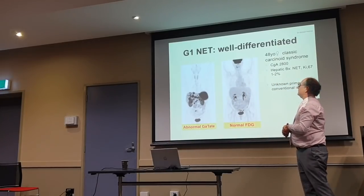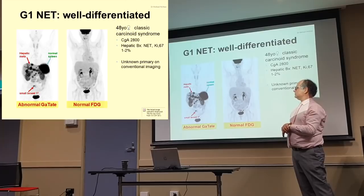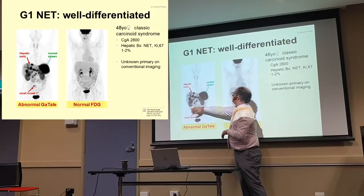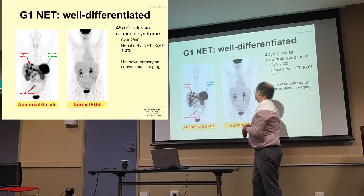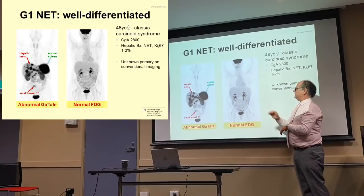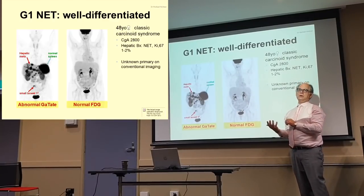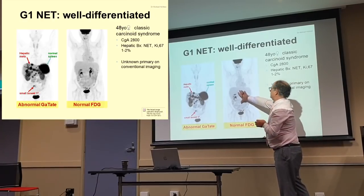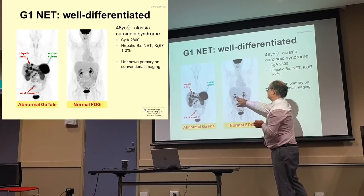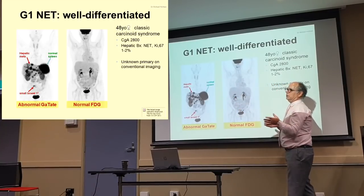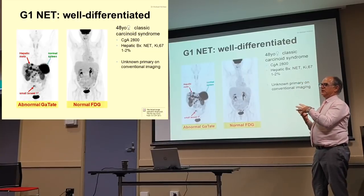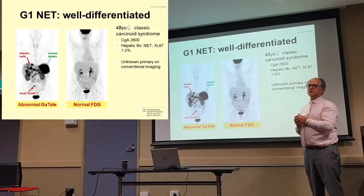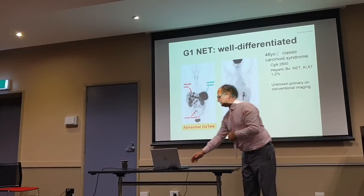This is an example of a patient with a well-differentiated neuroendocrine tumour, showing the GATA scan with multiple liver lesions and a small bowel primary. When we do the FDG-PET scan, we would expect a very slow-growing tumour not to take up radioactive sugar because the cells are growing very slowly. The FDG-PET scan is normal in those types of disease — you'll see uptake only within the kidneys and bladder, which is normal. We can use that as a way of gauging tumour behaviour rather than having to biopsy every lesion.